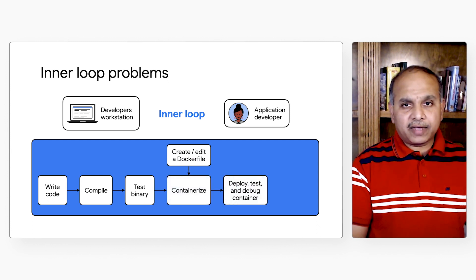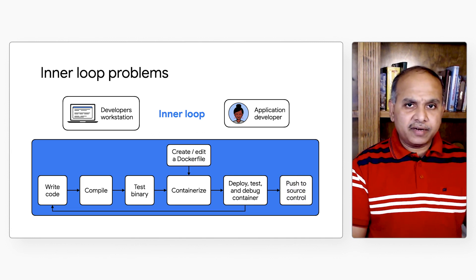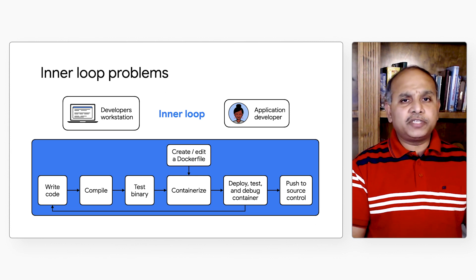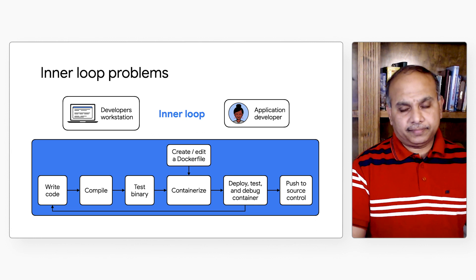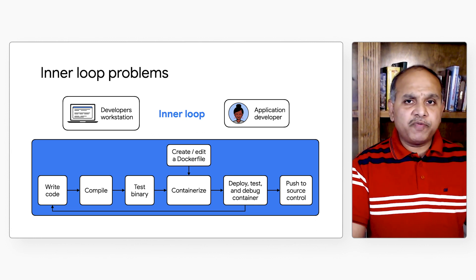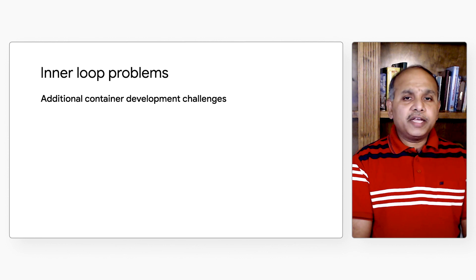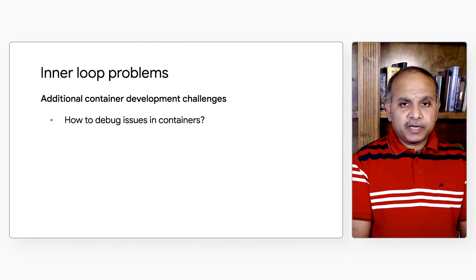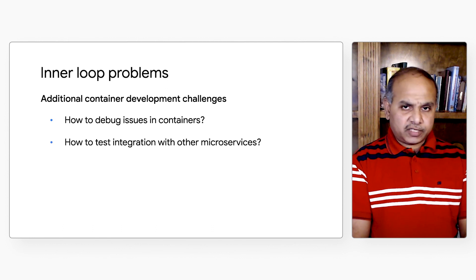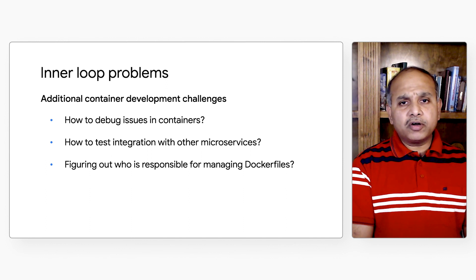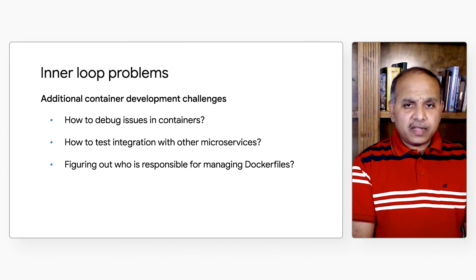After writing code, compiling it, and testing the binary, the developer will need to build the container using a Dockerfile, push the image to a registry, and deploy it all using Docker CLI. The developer has to switch back and forth between the IDE and the Docker CLI tool. This can make the development process particularly challenging for developers who are new to containers. Many developers don't know how to debug with containers, it can take several minutes for each change, and the local environment still doesn't match production because the developer is not using Kubernetes. Additional challenges include how to debug issues in containers, how to test integration with other microservices, and figuring out who is responsible for managing Dockerfiles and the different layers within them.